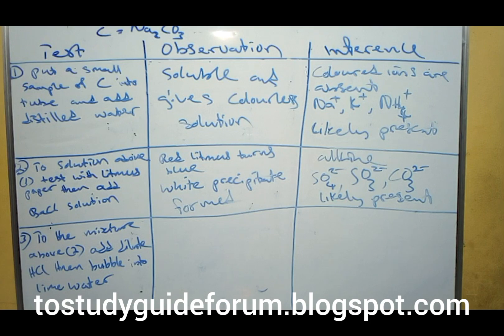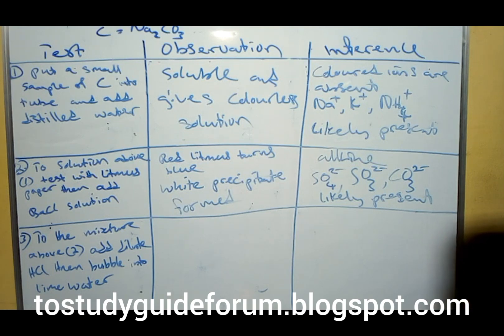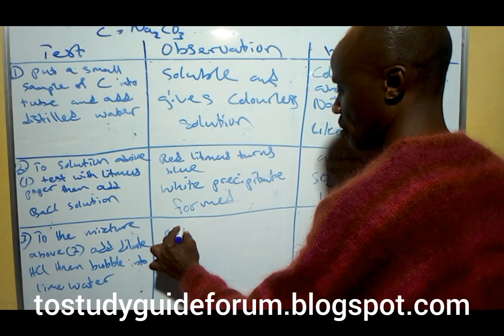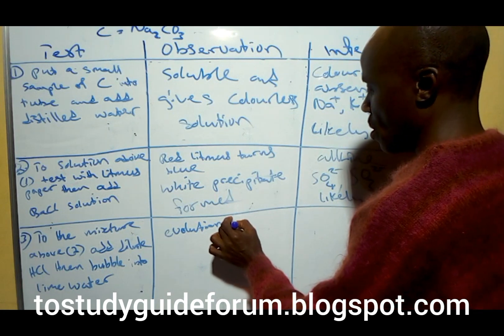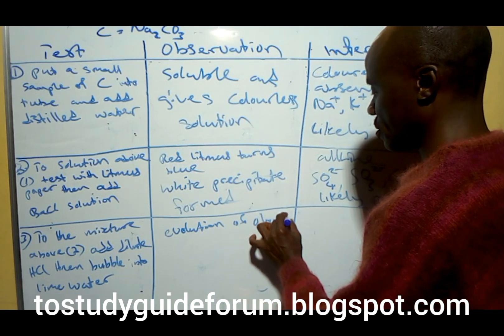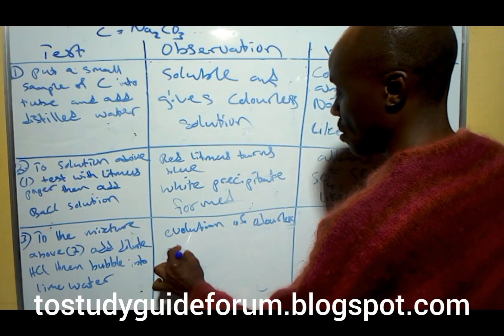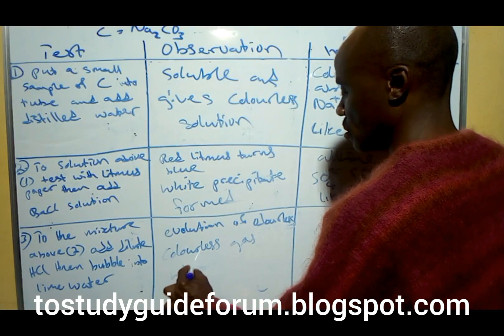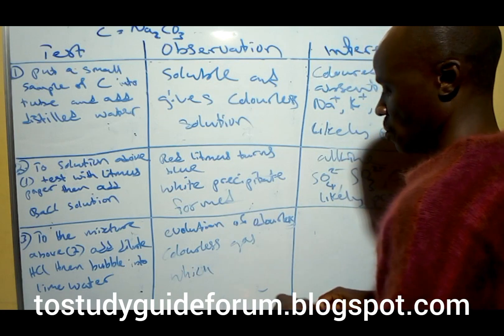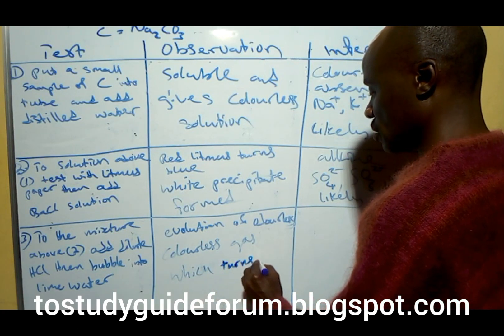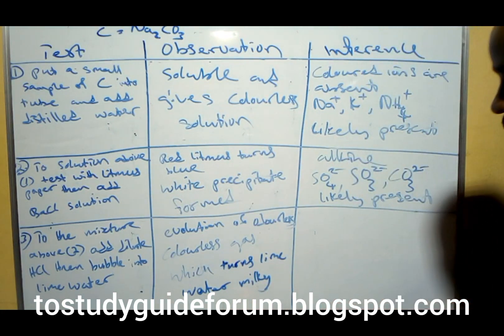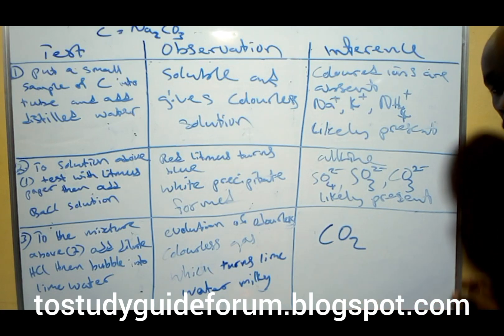Next, to the solution above, we add dilute hydrochloric acid, then bubble the gas into lime water. When we add dilute hydrochloric acid, we notice an evolution of an odorless, colorless gas which turns lime water milky.